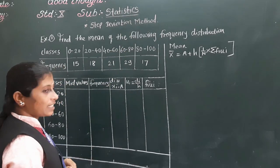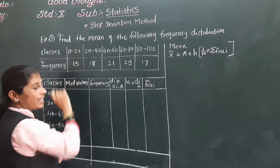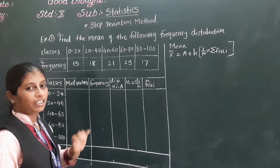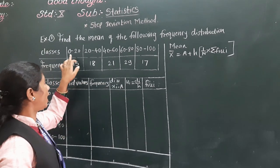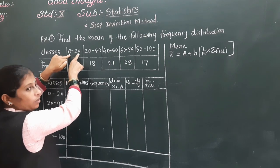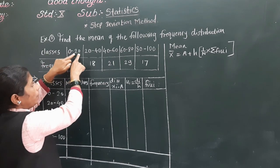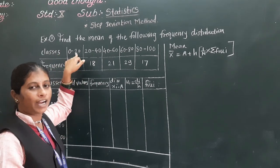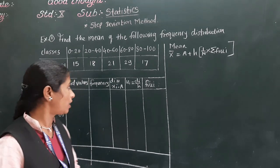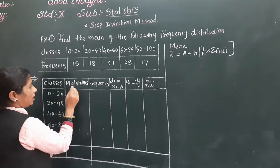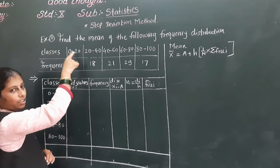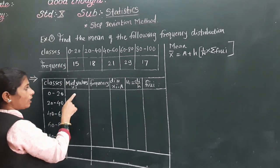Last time we had examples where xr values were directly given. But here classes are given, so we have to find xr. When class intervals are given, xr is the mid value — we find it as the sum of the two class boundaries divided by 2. So for 0 to 20: 0 plus 20 equals 20, divided by 2 equals 10.